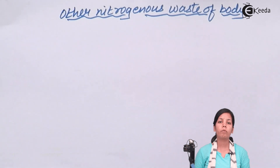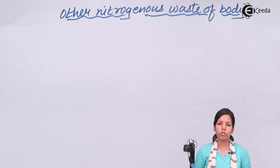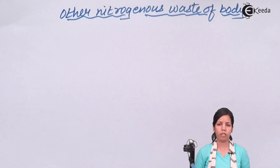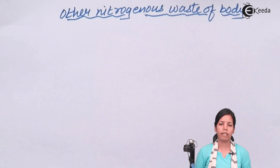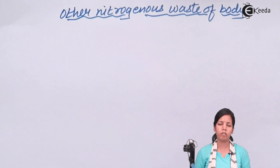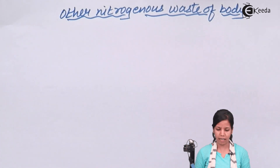Bilirubin is associated with your bile pigments, which are basically formed in the liver cells and stored in the gallbladder due to the breakdown of hemoglobin. Allantoin is formed from uric acid, and its formation can be initiated by uric acid formation as a result of an oxidation reaction catalyzed primarily by the enzyme uricase.